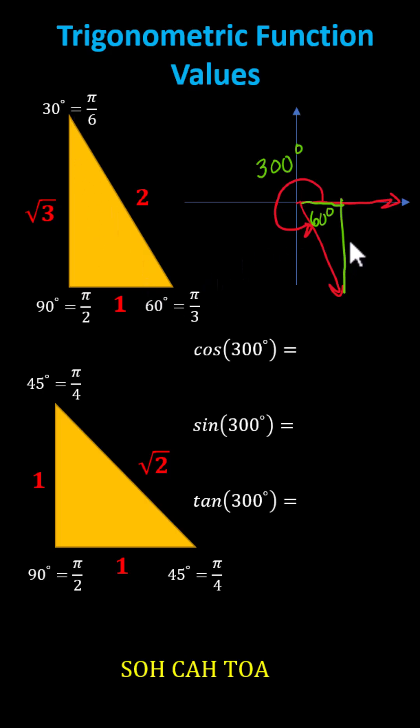However, because we're in the fourth quadrant, where x is positive and y is negative, we label the short leg positive one, the longer leg negative square root of three, and the hypotenuse two. This is because in the fourth quadrant, x is positive and y is negative.